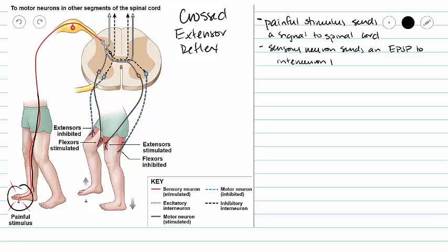We are going to send this painful information into our posterior gray horn, and we still have that EPSP to interneuron 1.